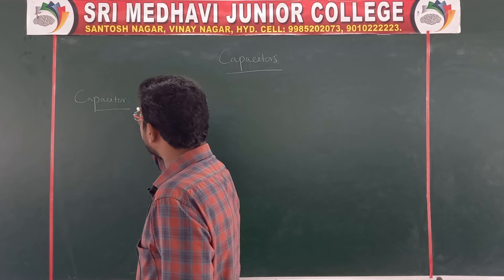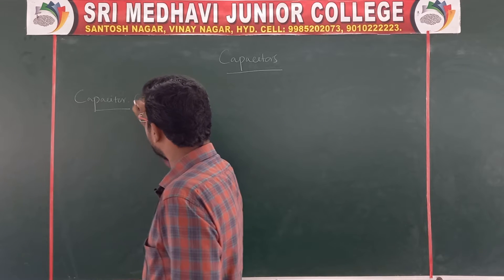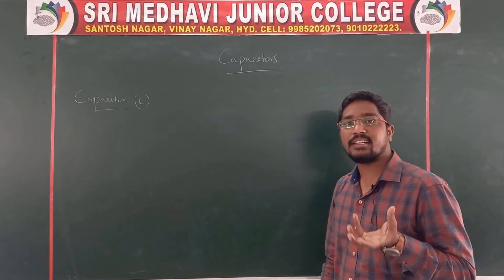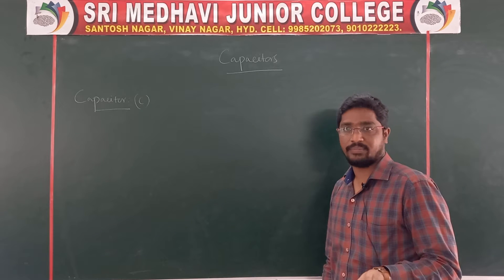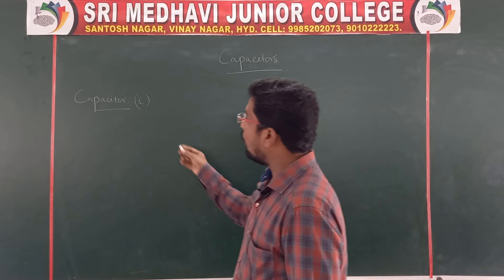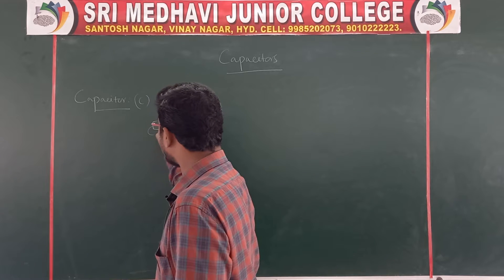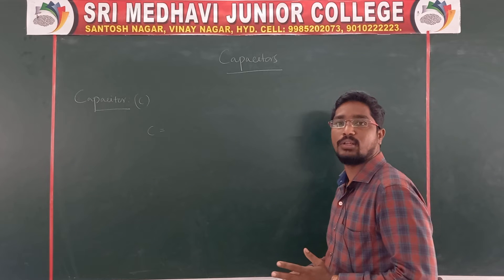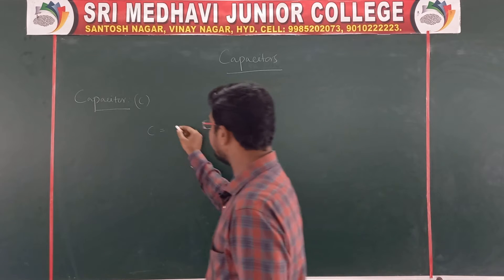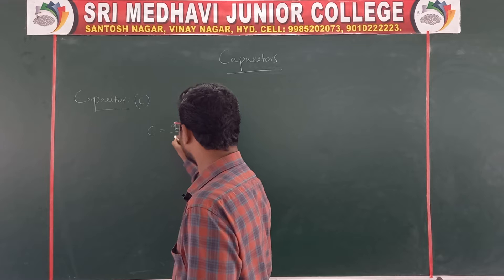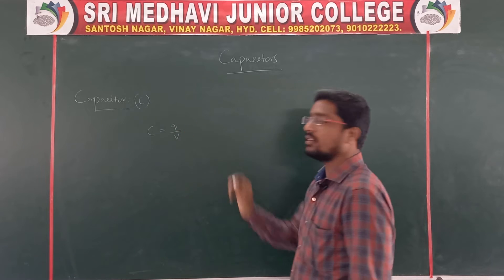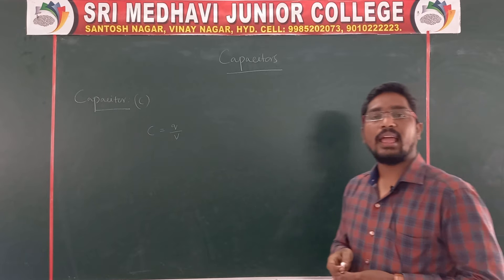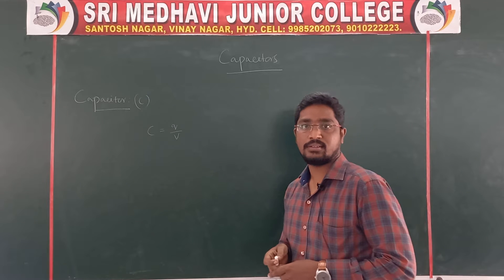The capacitance of a capacitor is denoted with C. The formula for capacitor is C equal to Q by V, where Q is the electric charge and V is the electric potential.